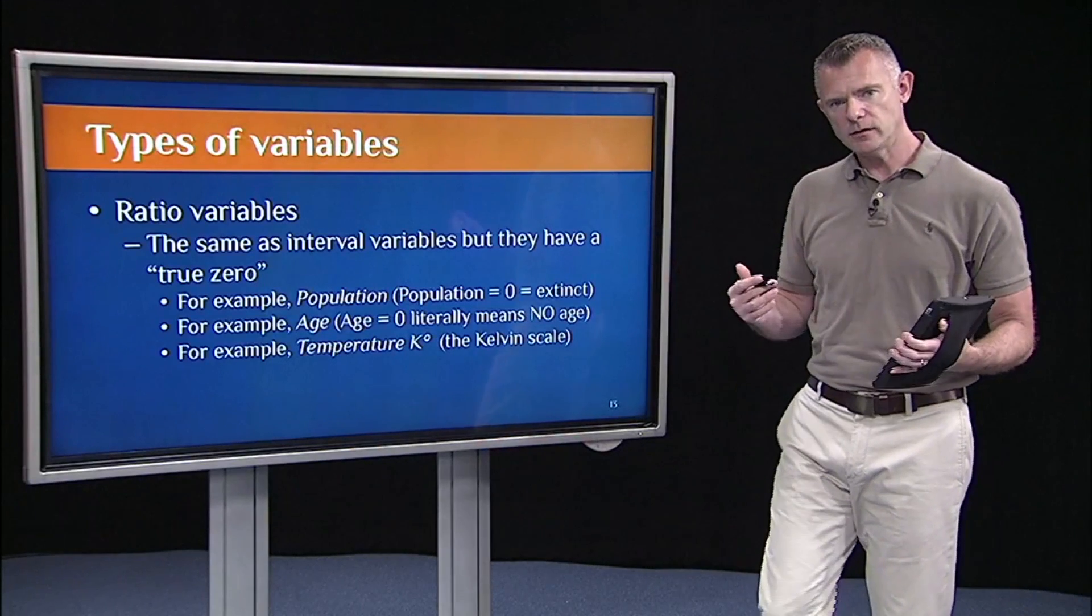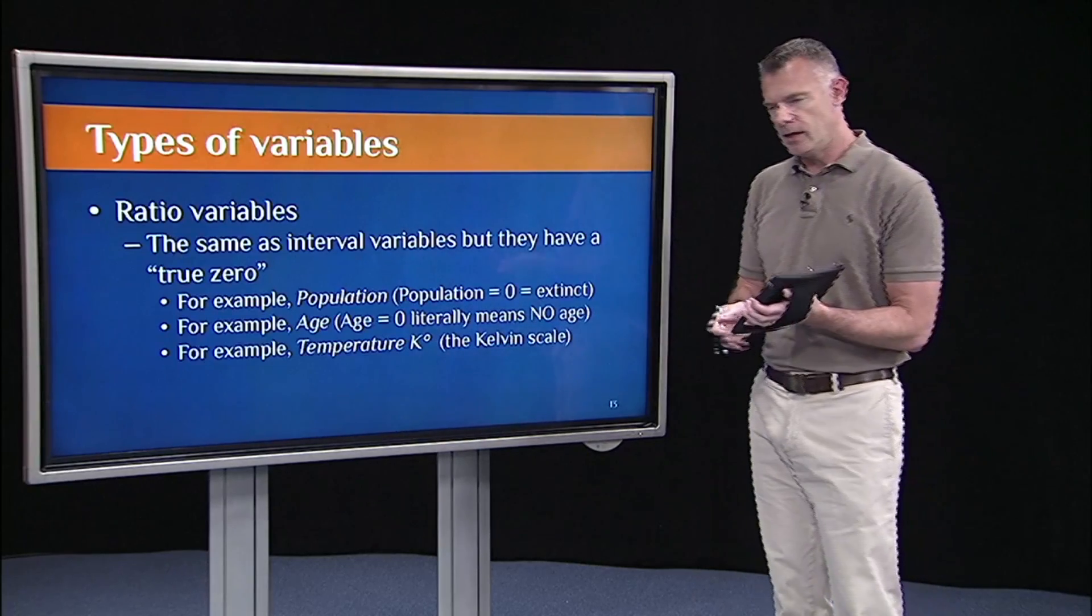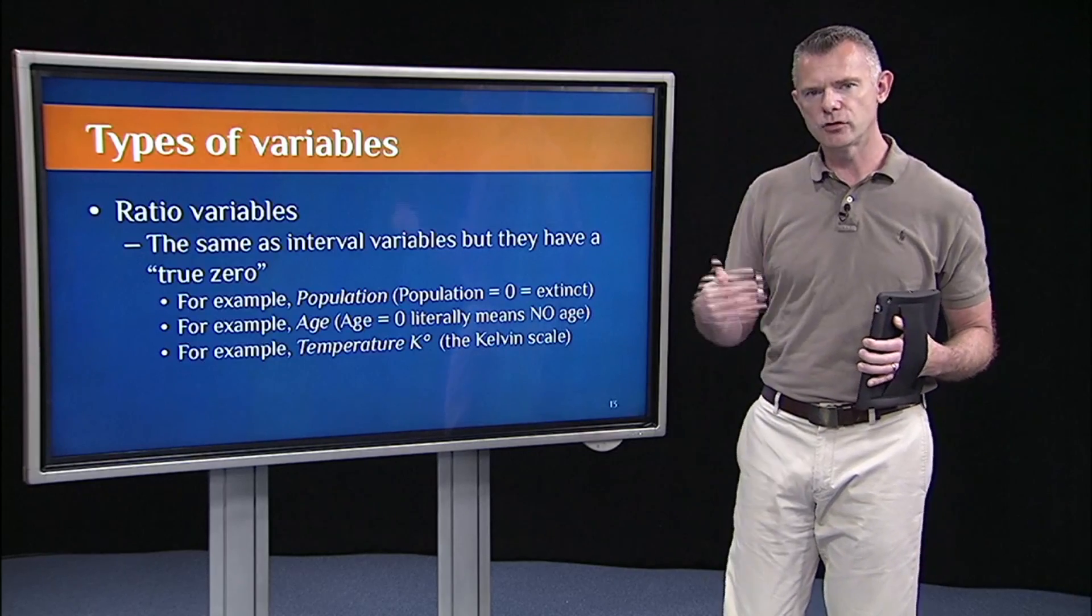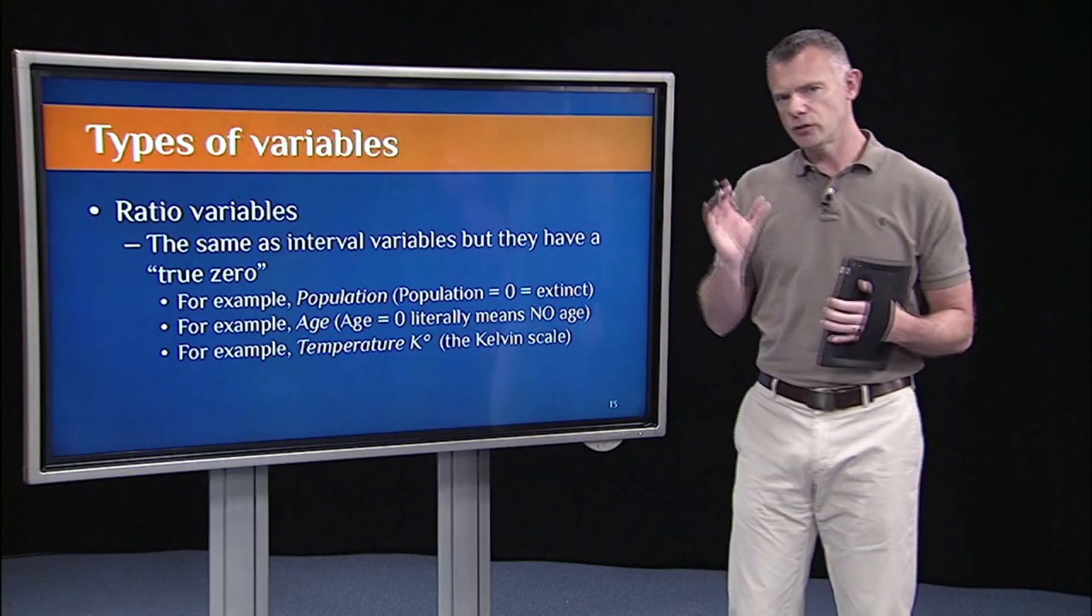The final type of variable is a ratio variable. This is the same as interval, but they also have a true zero point. So what I mean by a true zero point,